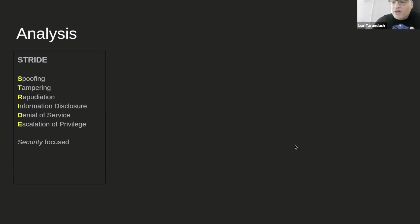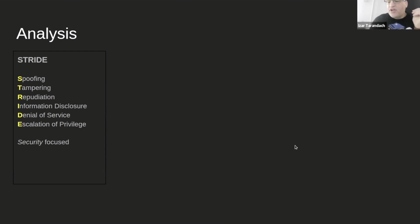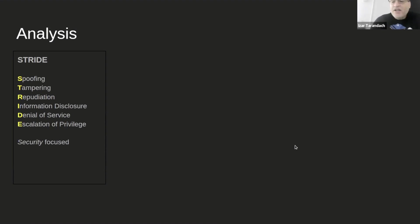Most of you have already heard about STRIDE. You look at the impacts that come through spoofing, tampering, repudiation, information disclosure, denial of service, escalation of privilege. You basically look at your representation and say this element, on a per-element basis, has a problem with spoofing — it happens this way, it doesn't authenticate, you can't guarantee that whoever is talking to it is actually who they say they are. So STRIDE is security focused.